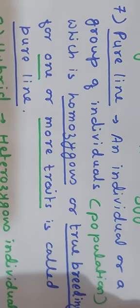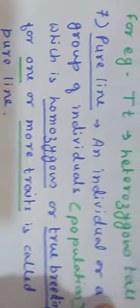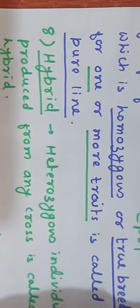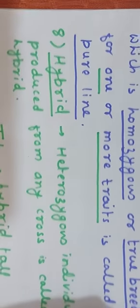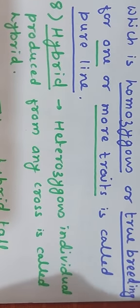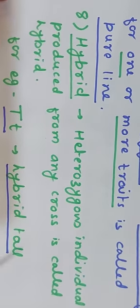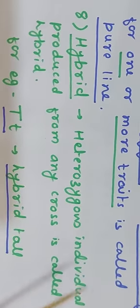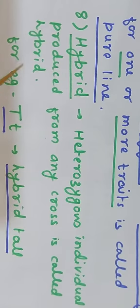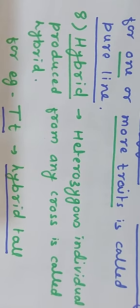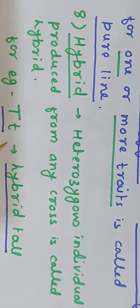Hybrid: a heterozygous individual produced from any cross is called a hybrid. For example, capital T small t — since it has two different alleles, it is a heterozygous condition, so that individual is called a hybrid. So the pair is: homozygous equals pure line, heterozygous equals hybrid.